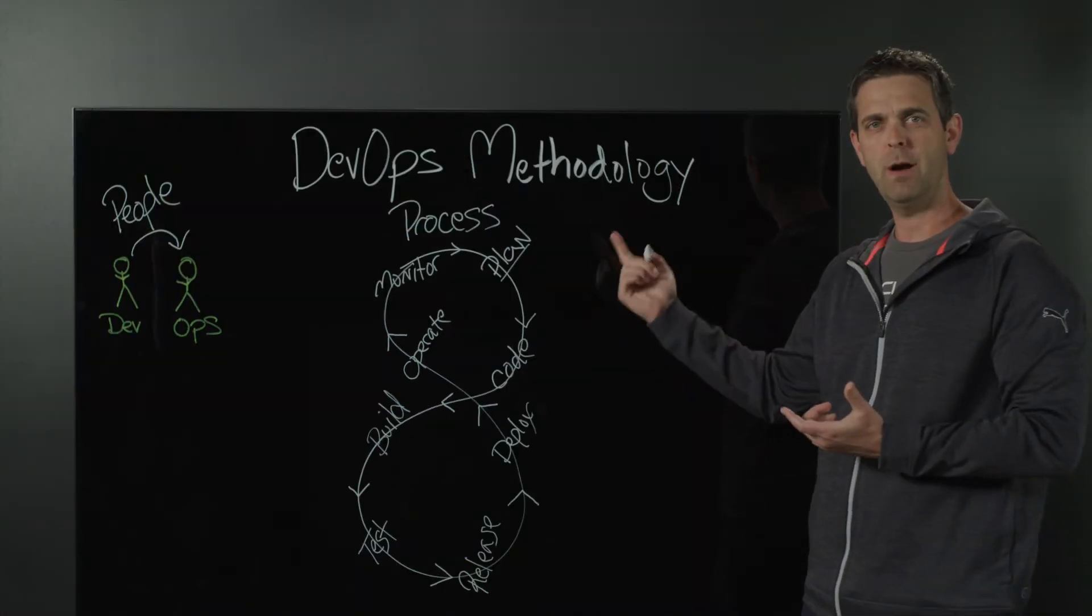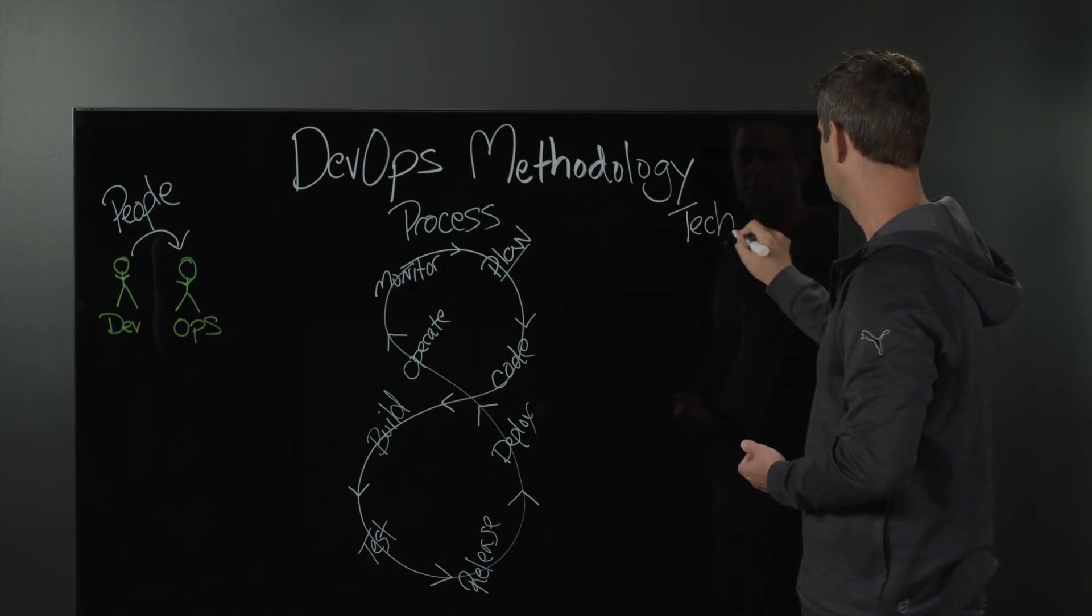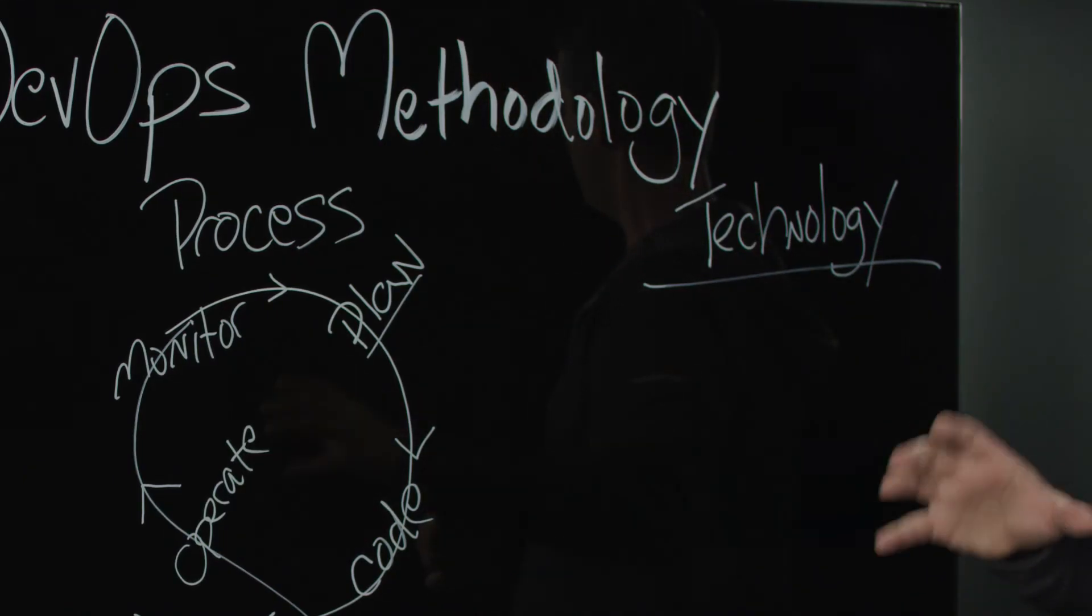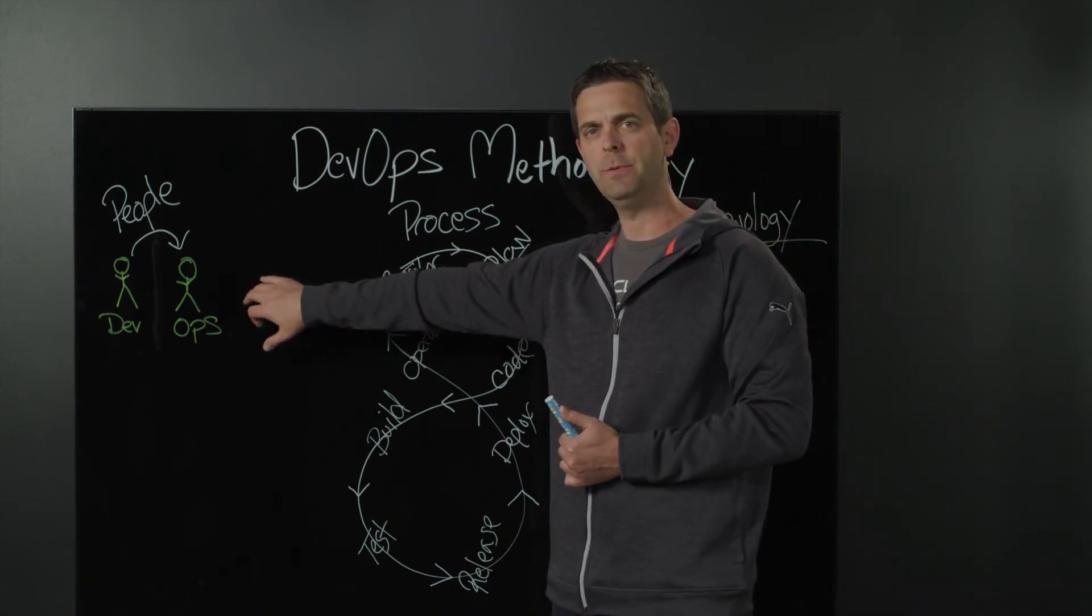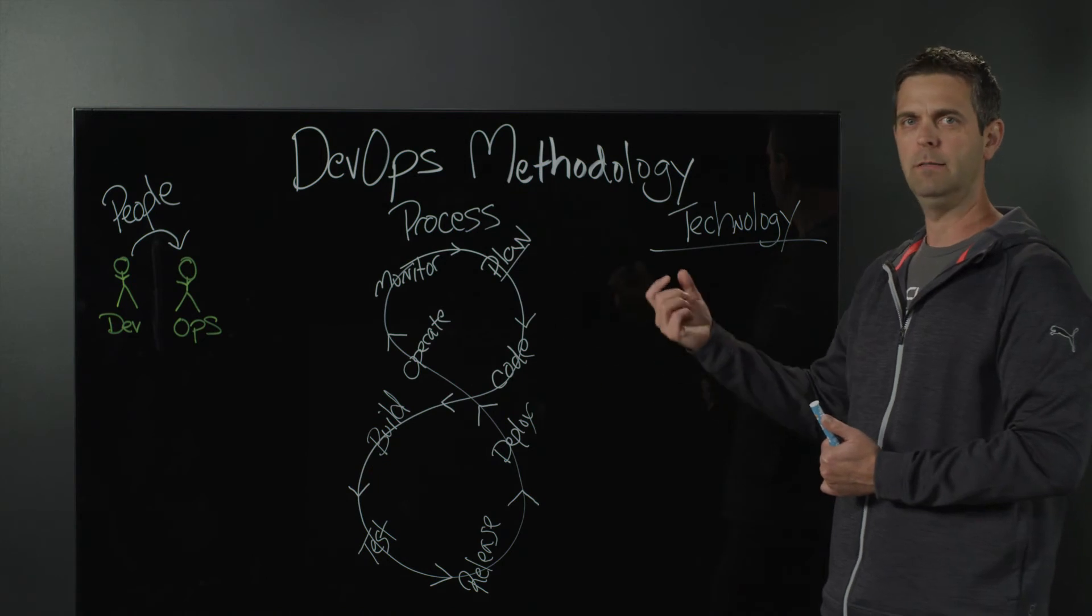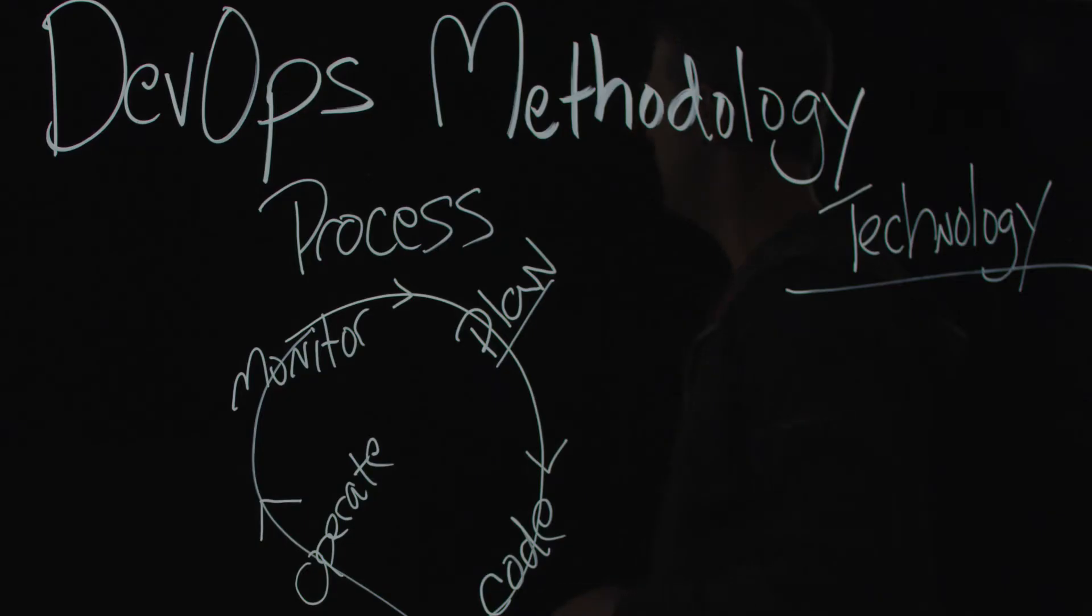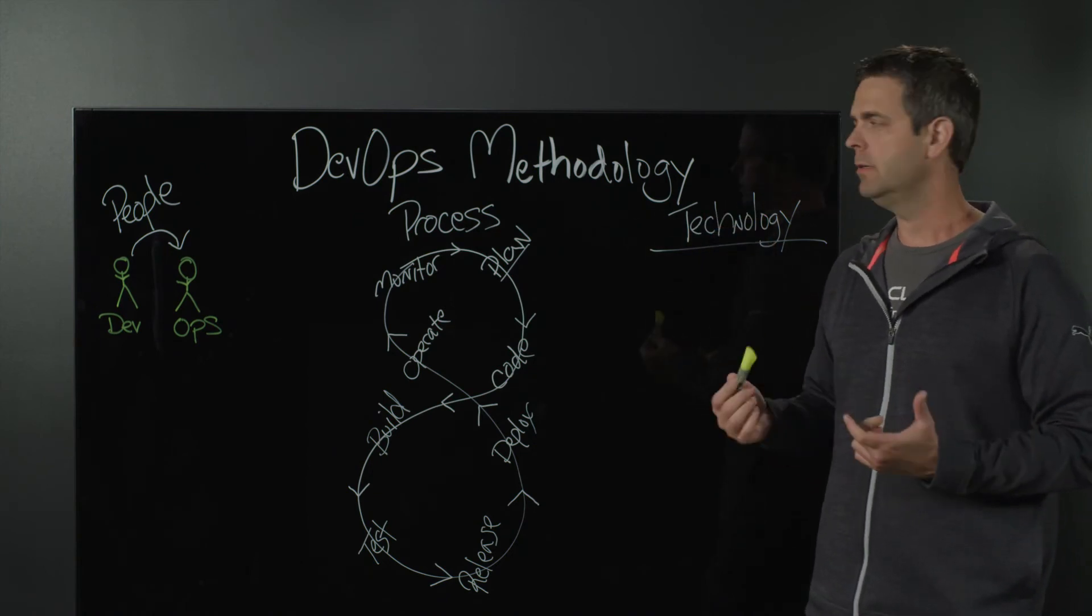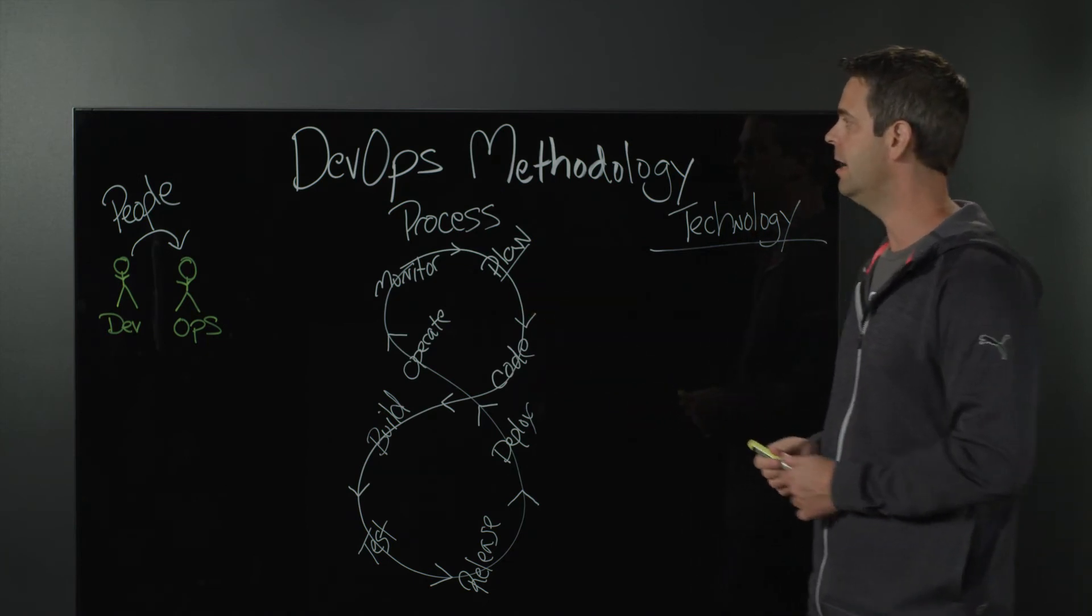In addition to people and process, we of course need to focus on the technology. Within this methodology, we want to make sure we utilize the right technology that not only enables the culture and the communication we're looking for on the people side, but helps facilitate and simplify the entire process flow of building, testing, deploying, releasing, and delivering code or software within our application ecosystem. On the technology stack, there's a few different layers that we want to think about delivering or utilizing to construct this end-to-end or to facilitate this end-to-end DevOps methodology.